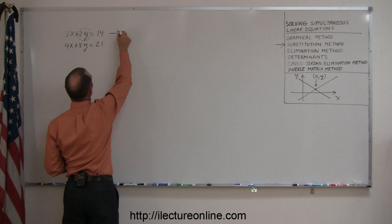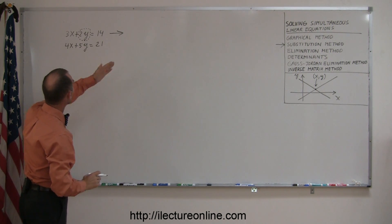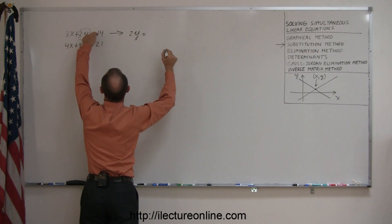So I'm going to solve this equation for y. First, I move the 3x across. So I get 2y equals, when I move the 3x across, this becomes minus 3x plus 14.